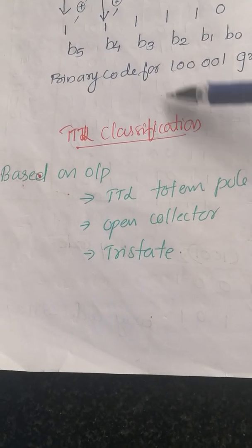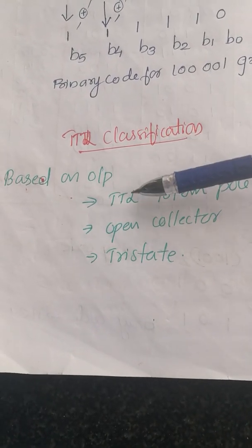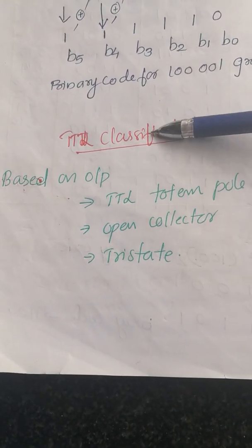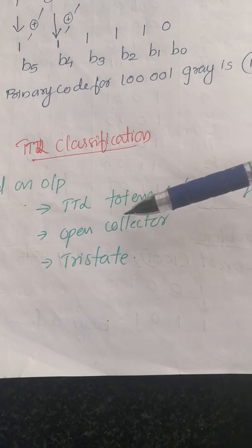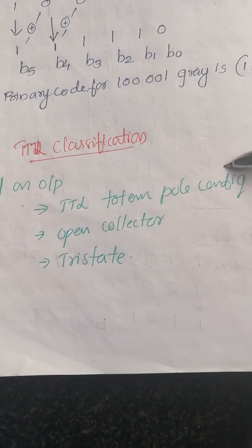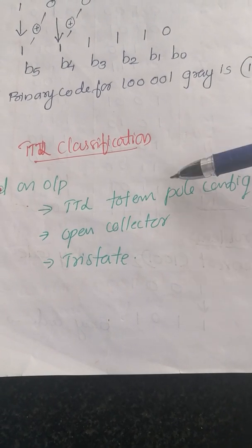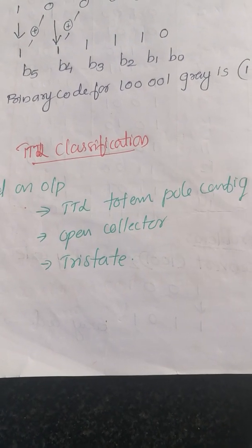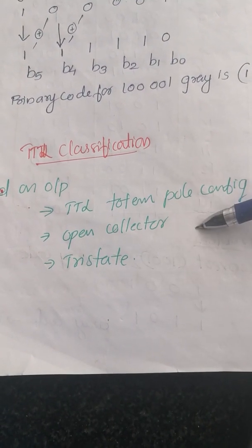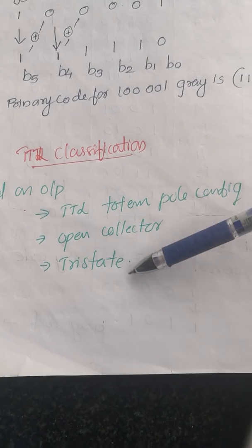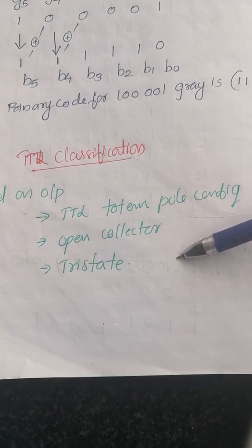TTL Classification. Based on the output configuration, TTL can be classified into three types: Totem Pole Configuration, Open Collector Configuration, and Tri-State Configuration.